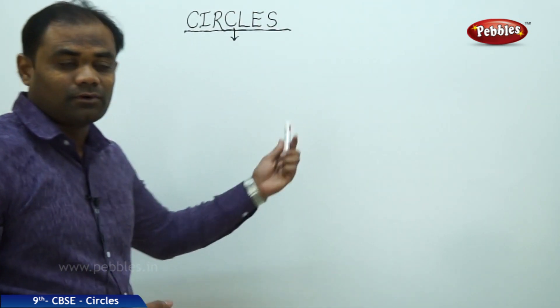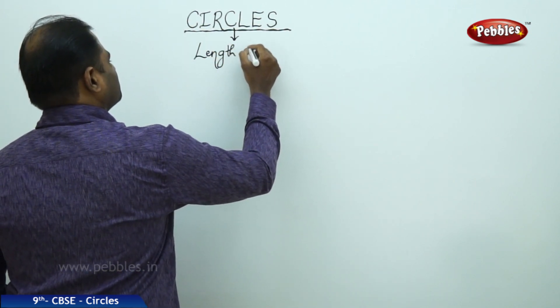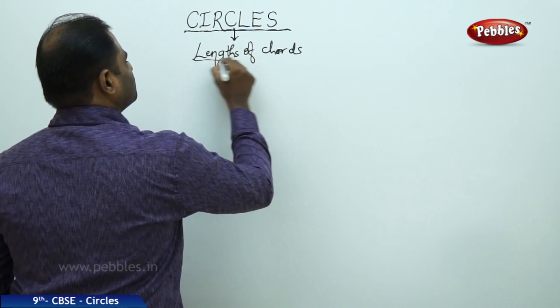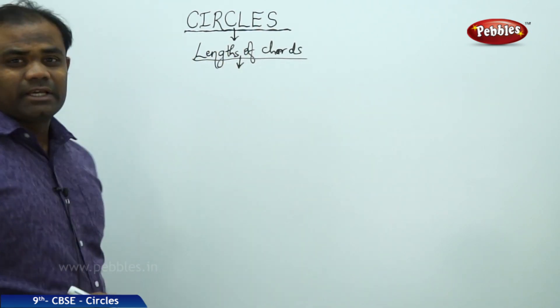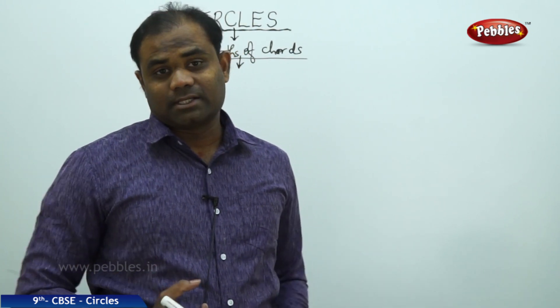Now that we have discussed the length of diameter, let us also investigate the length of chord. What would be the length of chord? Will all the chords have the same lengths, just like all diameters for the circle have equal lengths? Let us investigate the same property for chord lengths. Let us take a circle and investigate different sets of chords to see if all the lengths are equal.